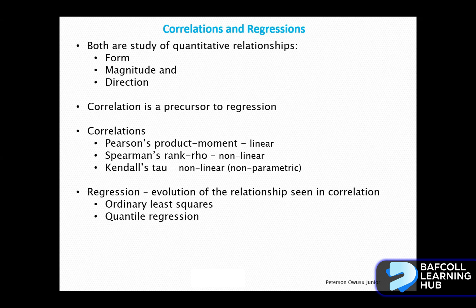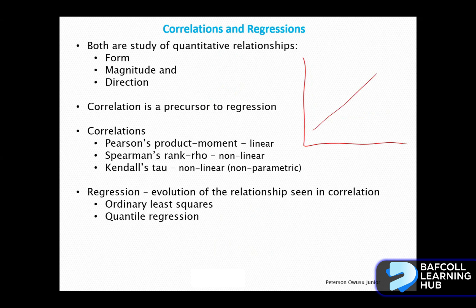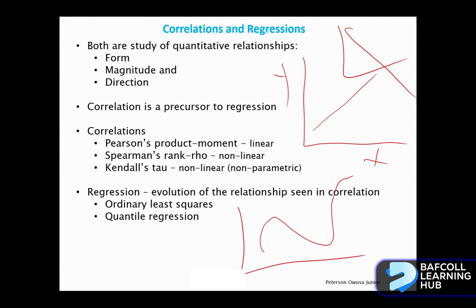By linear, I mean it's a straight line. Non-linear means the relationship cannot be described by a straight line — it can be in any form. For linear, we can describe the relationship in a straight line between X and Y. For non-linear, it's going to be either any form of a curve. Any form of relationship that is not described by a straight line will be non-linear.